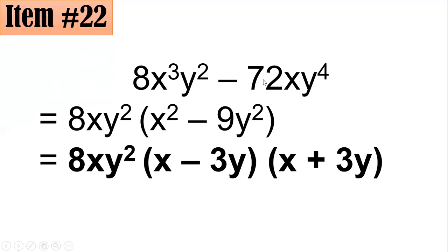Taking out 8, for x cubed and x you pick the one with the smaller exponent, so x. For the y's, you pick y squared. So 8xy squared is your GCF. Dividing each term by the GCF: 8x cubed y squared divided by 8xy squared gives x squared.